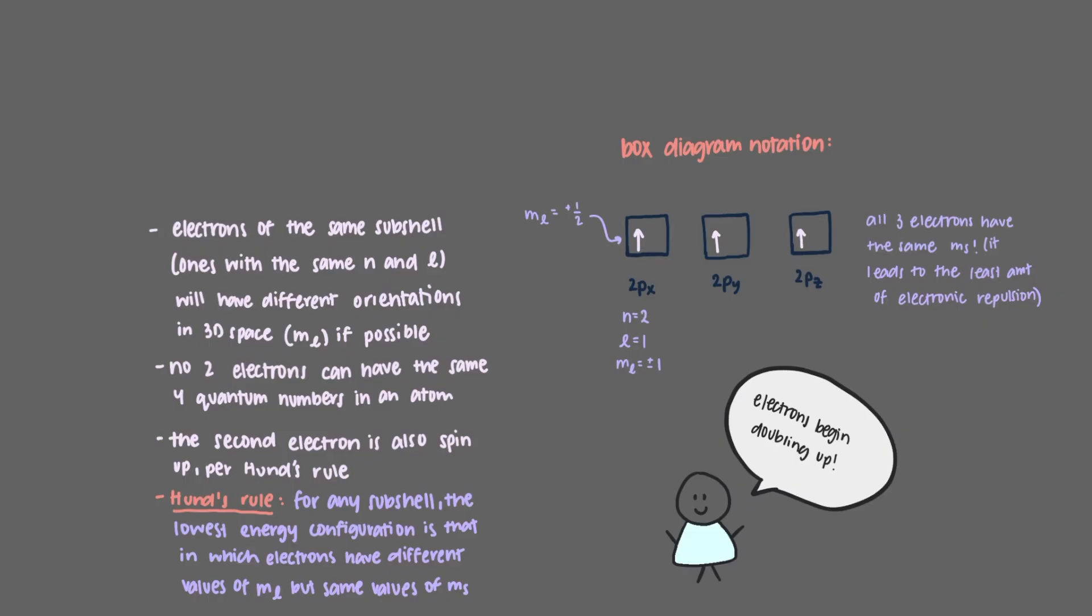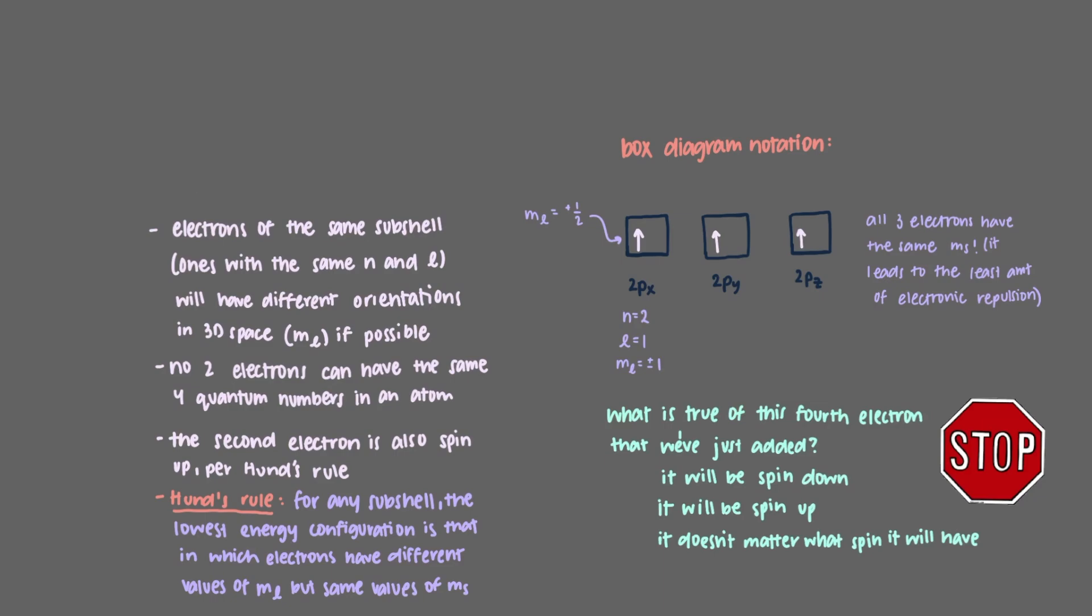Right now, we have three 2p electrons, so when we add one more electron to our atom, we have no choice but for it to have the same first three quantum numbers, n, l, and m sub l, as one of the others. What is true of this fourth electron that we've just added? Let's say that our fourth electron is another 2py electron, but really it could have also been 2pz or 2px.